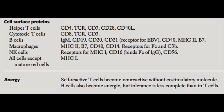Let's talk about a specific phenomenon called anergy. This is a process by which self-reactive T cells become non-reactive, and it involves the lack of a co-stimulatory molecule. For T cells to become activated, they have to have two signals: one through the MHC-TCR interaction, and one through the B7-CD28 interaction. If the B7-CD28 interaction isn't there, this produces a state of anergy, meaning the T cell becomes non-reactive or shut off and won't ever activate. B cells can also become anergic, but tolerance is less complete in B cells than in T cells.